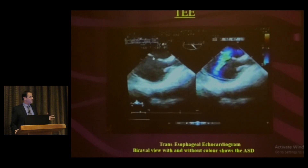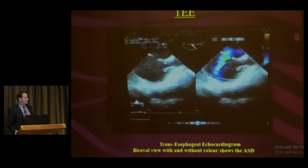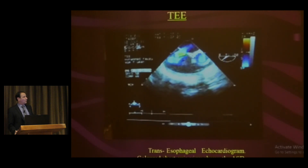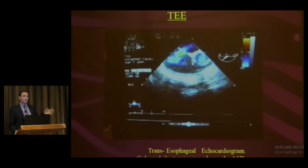We must look at the rims of the defect. In the longitudinal view at 100–120 degrees, you see the superior and inferior rims, which should be at least 5 mm. In the short-axis view at 50 degrees, you see the retroaortic rim and the posterior rim. In 10–20% of cases the retroaortic rim is absent. If two rims are deficient, you cannot close and must refer to surgery. If only the retroaortic rim is deficient, you can proceed with closure.